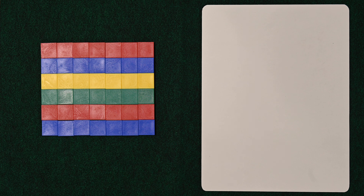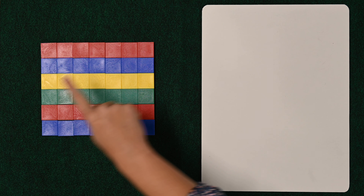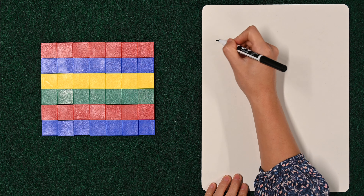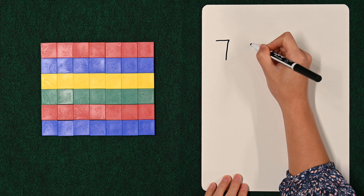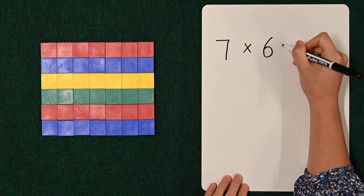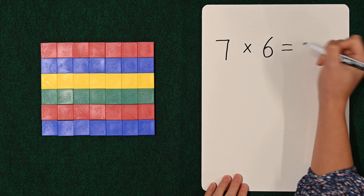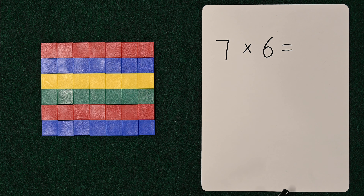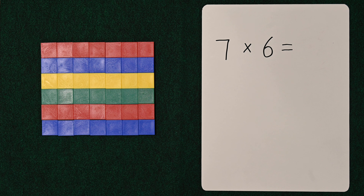And what we want to find out is how many little squares make up this rectangle. So we write it as seven by six, and we want to find out what that equals. It's also read as seven times six. We can add seven six times, or we can add six seven times.